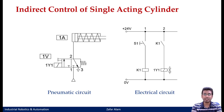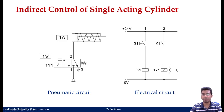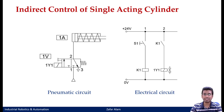However, when you go for indirect control of a single acting cylinder, note that there are no changes to your pneumatic circuit — whatever change exists is in the electrical portion. For an indirect control, we are using a relay, and through that relay we are energizing our solenoid valve 1Y1. Using a push button, we energize this relay and we use a make contact of the same relay K1 to energize our solenoid valve. This is known as your indirect control of a single acting cylinder.